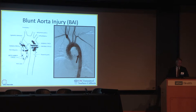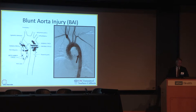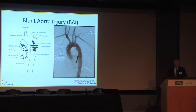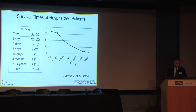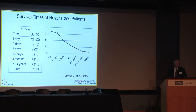Moving to blunt aortic injury — this is a deceleration injury trauma with torsion of the ascending and more specifically the descending aorta, leading to tears, bleeding, and sometimes death, particularly before patients reach the hospital. A classic paper from Parmalee in 1958 showed the steady mortality rate if not treated or recognized. There are patients who come 20 years later with a false aneurysm, but these are the exception and not the rule.